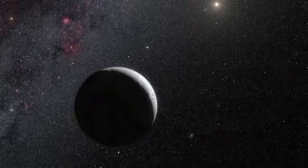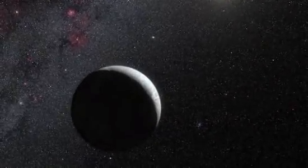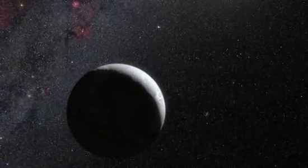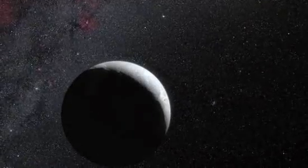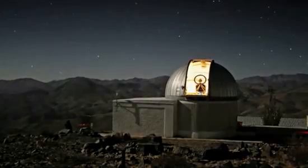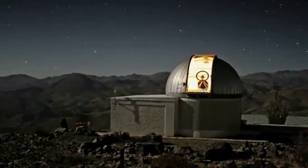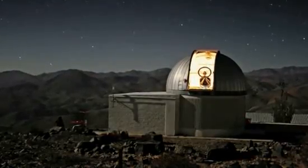Astronomers have accurately measured the size of the remote dwarf planet Eris for the first time. They caught it as it passed in front of a faint star, using the Belgian TRAPPIST telescope at ESO's La Silla Observatory, along with two other telescopes in Chile.